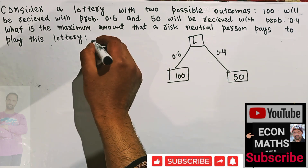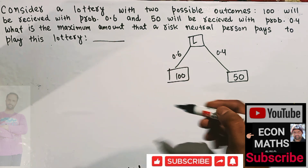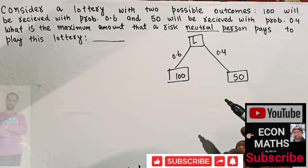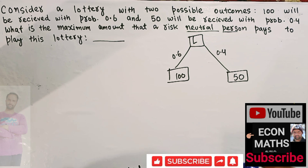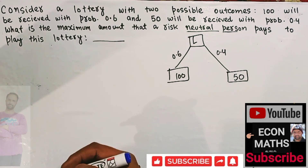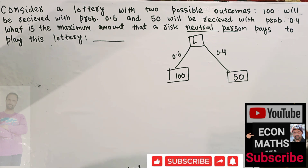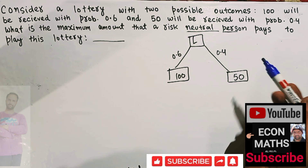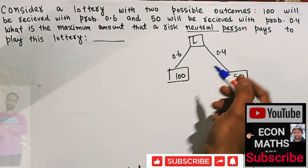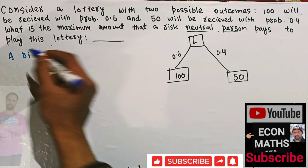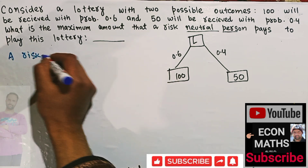How much money is the risk-neutral person willing to pay to play this lottery? It is actually very simple — a risk-neutral person will pay the expected value of the lottery. So the maximum amount that a risk-neutral person will pay to play this lottery will be equal to the expected value of the lottery. A risk-neutral person will be willing to pay the expected value of the lottery.